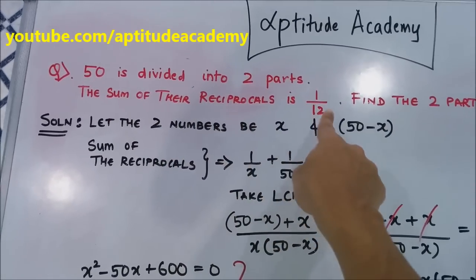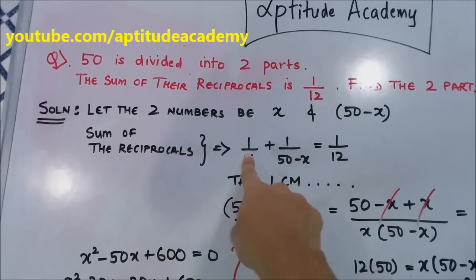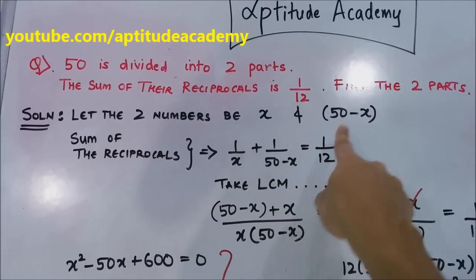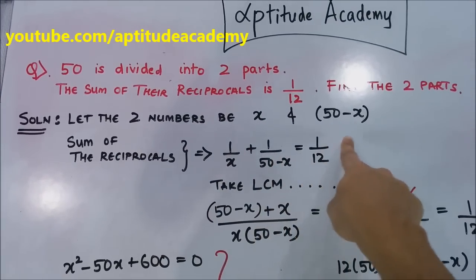Going to the second statement, the sum of their reciprocals is 1/12. So the sum of the reciprocals will be 1/x plus 1/(50-x). This is given to equal 1/12.